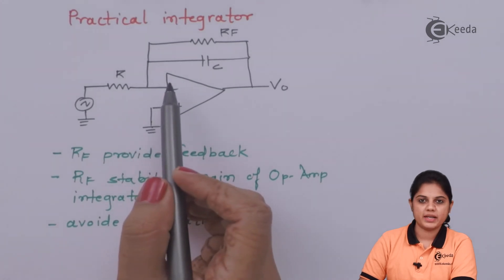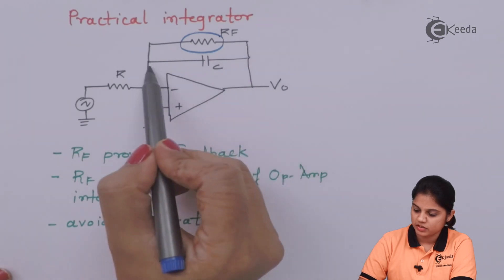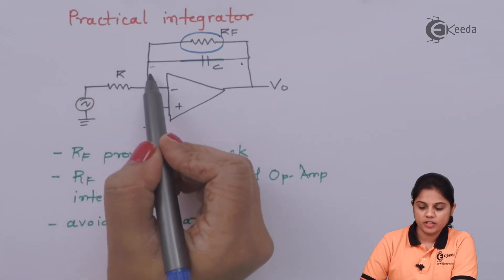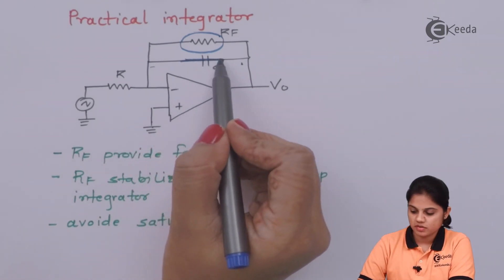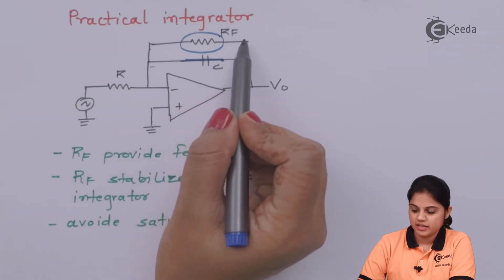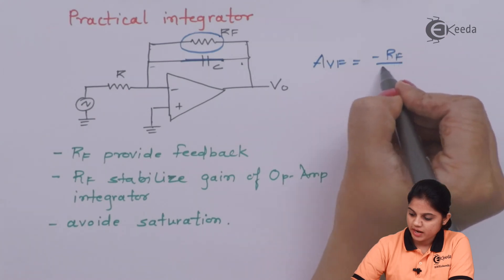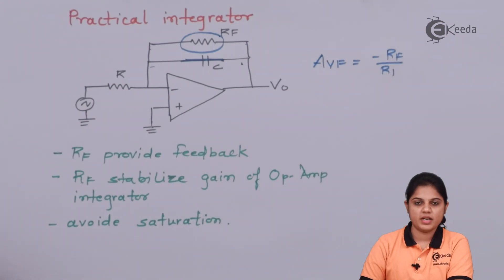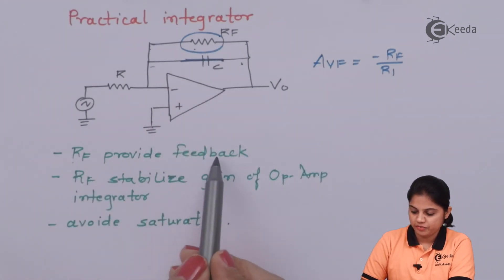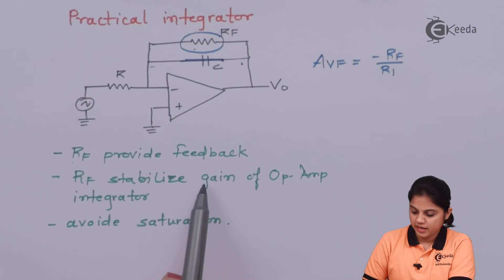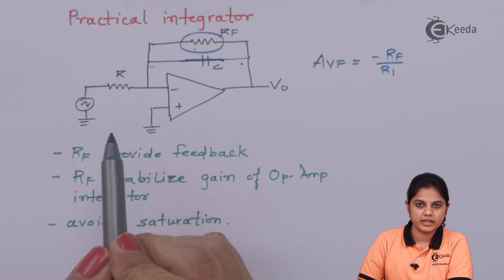This is the circuit diagram of a practical integrator, where you can see that RF — the feedback resistance — is connected in parallel with the capacitor. So if at high frequency the capacitor gets short-circuited, or at any frequency the capacitor gets open-circuited, RF will act as the feedback resistor and the closed-loop voltage gain of −RF/R1 will be stabilized. RF provides feedback, stabilizes the gain, and prevents saturation of the op-amp.